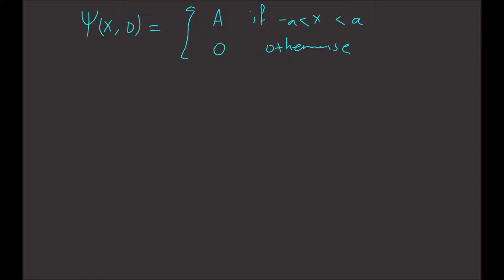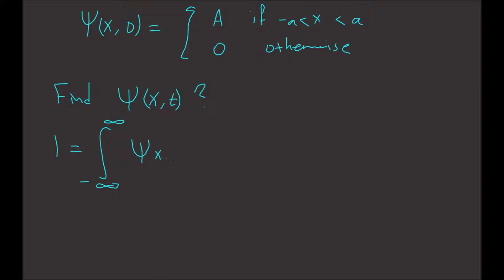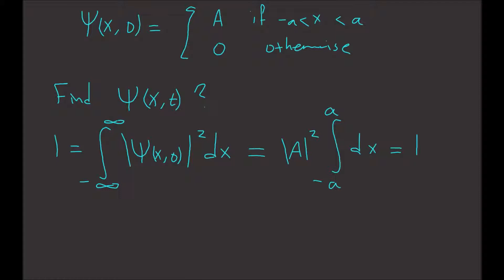The question is we have to find psi of x and t. First, we have to normalize this wave function. So 1 equals the integral from negative infinity to infinity of psi squared dx. Integrating, we get the modulus squared of A times the integral from negative a to a dx, which should equal 1. Solving for A, this normalization constant equals 1 divided by the square root of 2a.